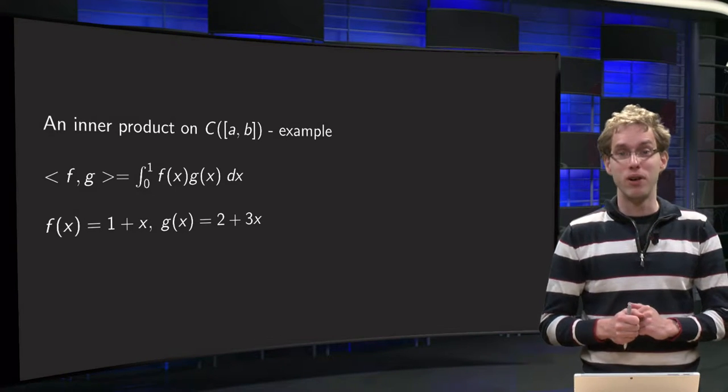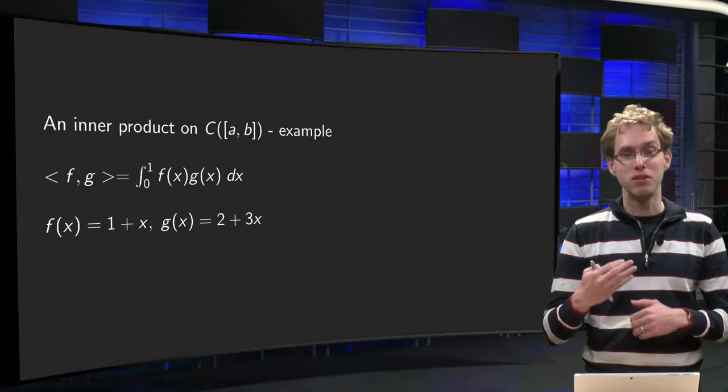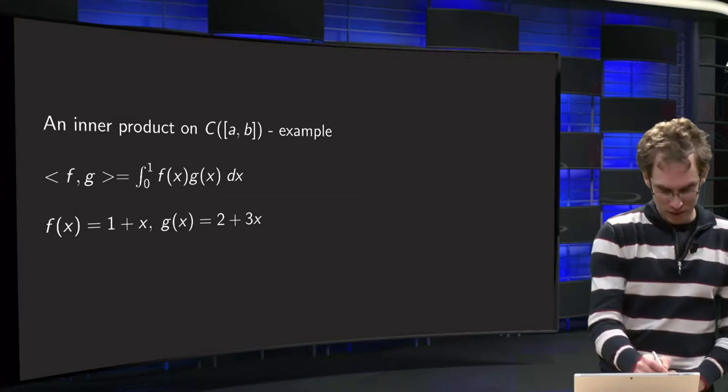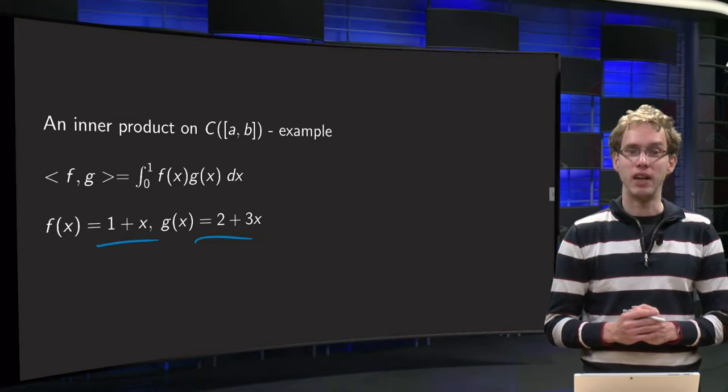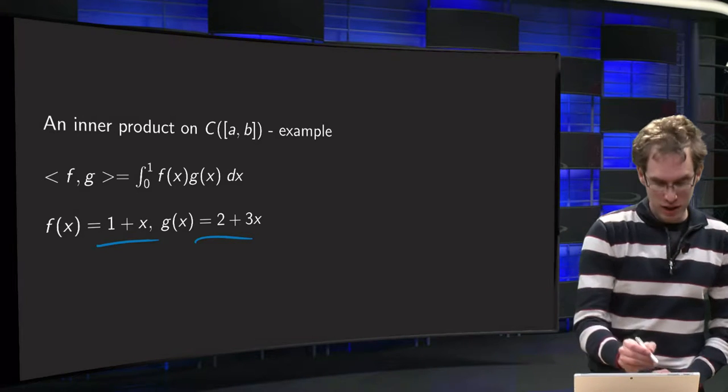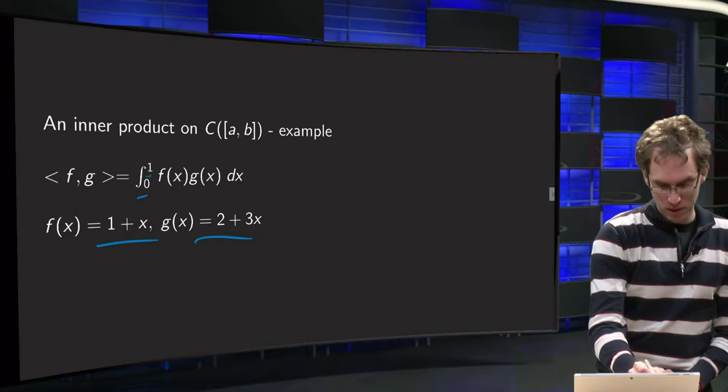We have our inner product on the continuous functions and we take two functions f and g, f equals 1 plus x and g equals 2 plus 3x, and we take a to be equal to 0 and b to be equal to 1.